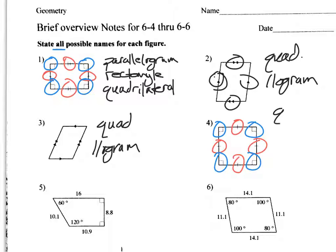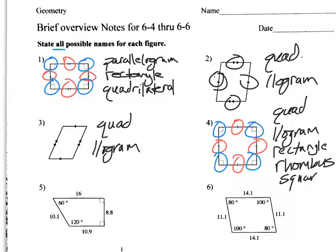So it's a quadrilateral. It's a parallelogram. It's a rectangle because it has four right angles. It's also a rhombus because all the sides are equal. And then it's a square. So you got to list everything that applies. So that's where this gets a little bit tricky sometimes.